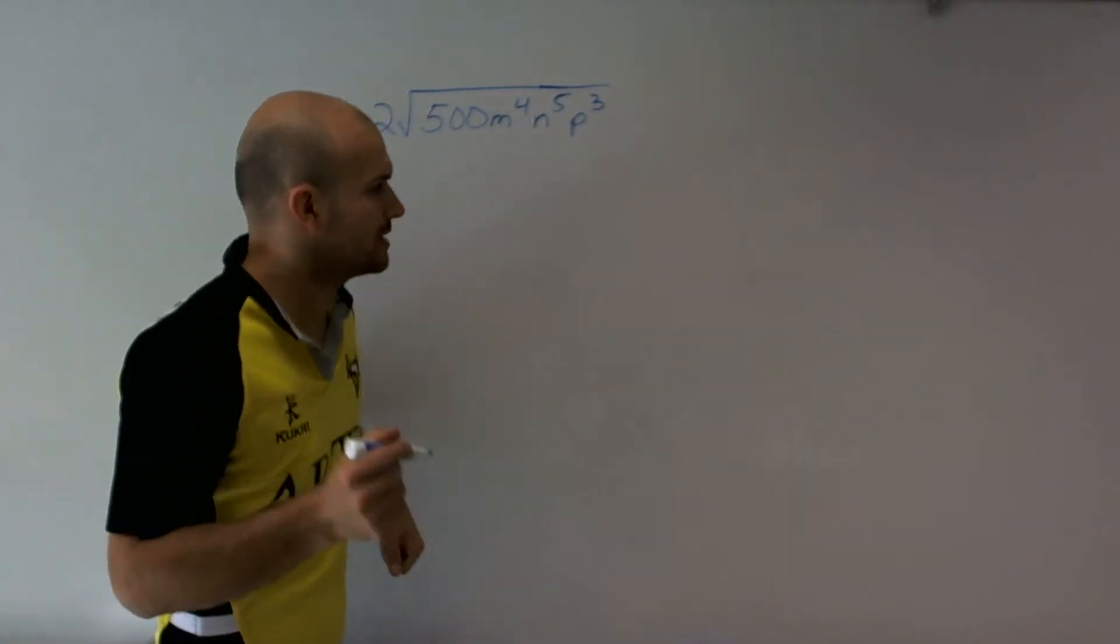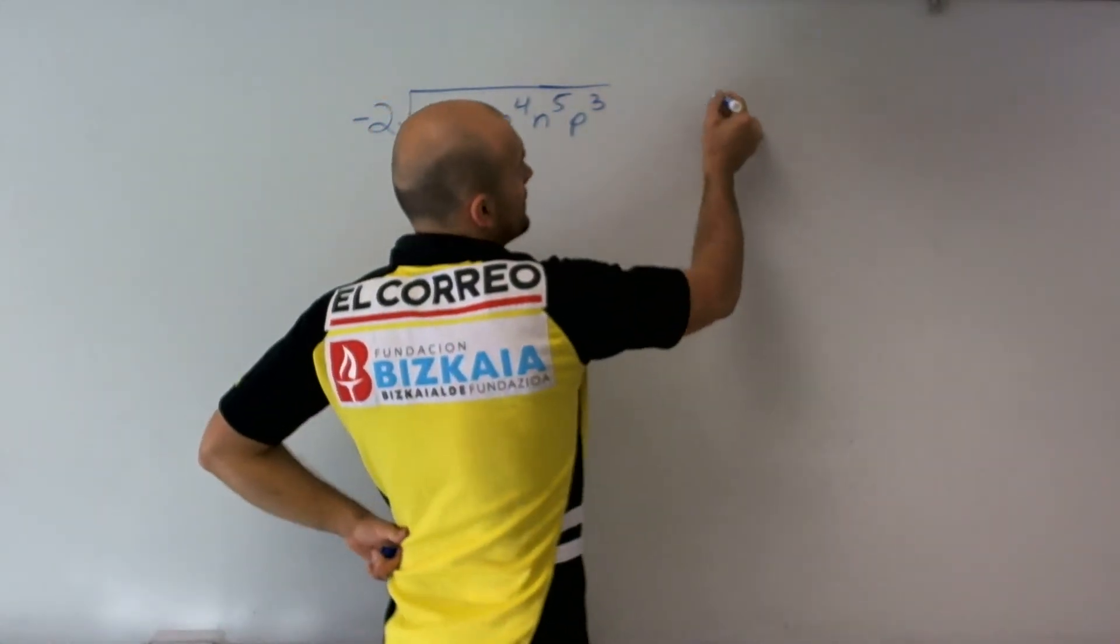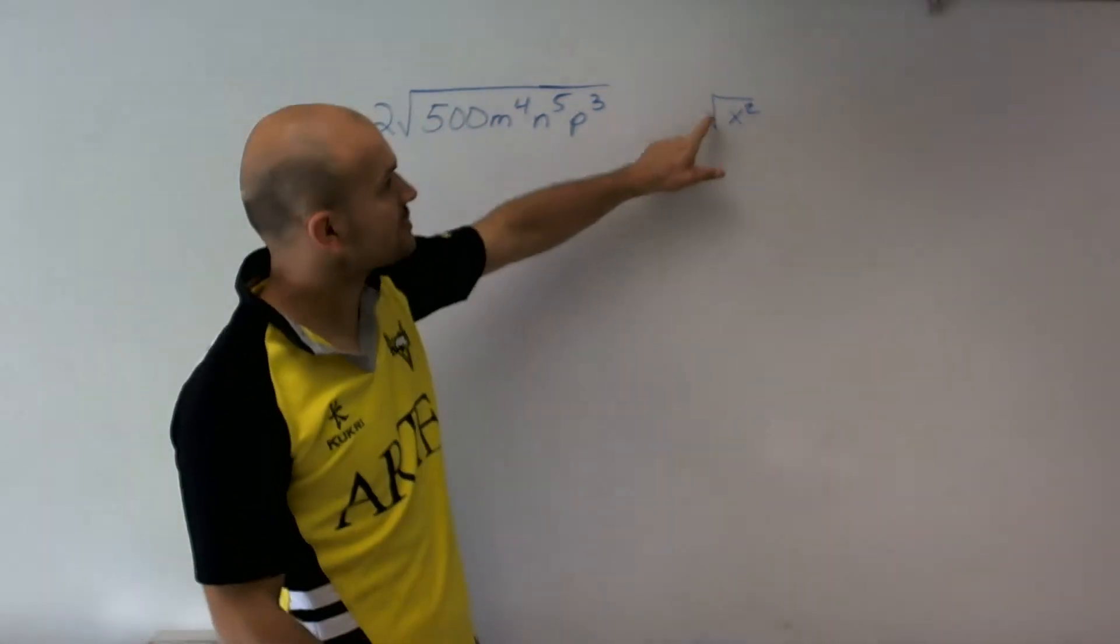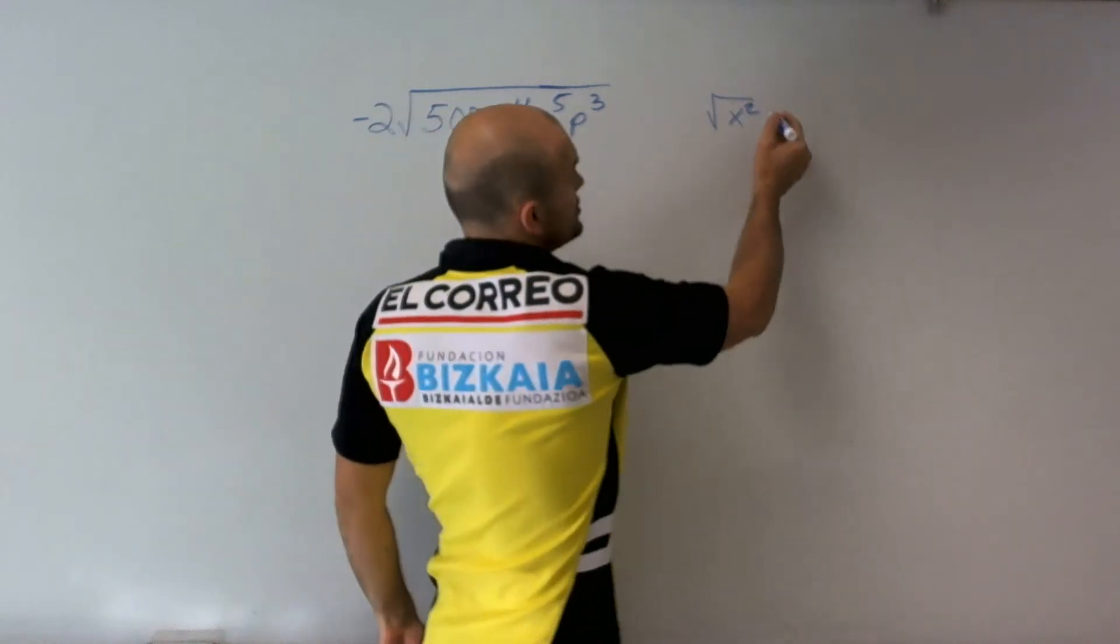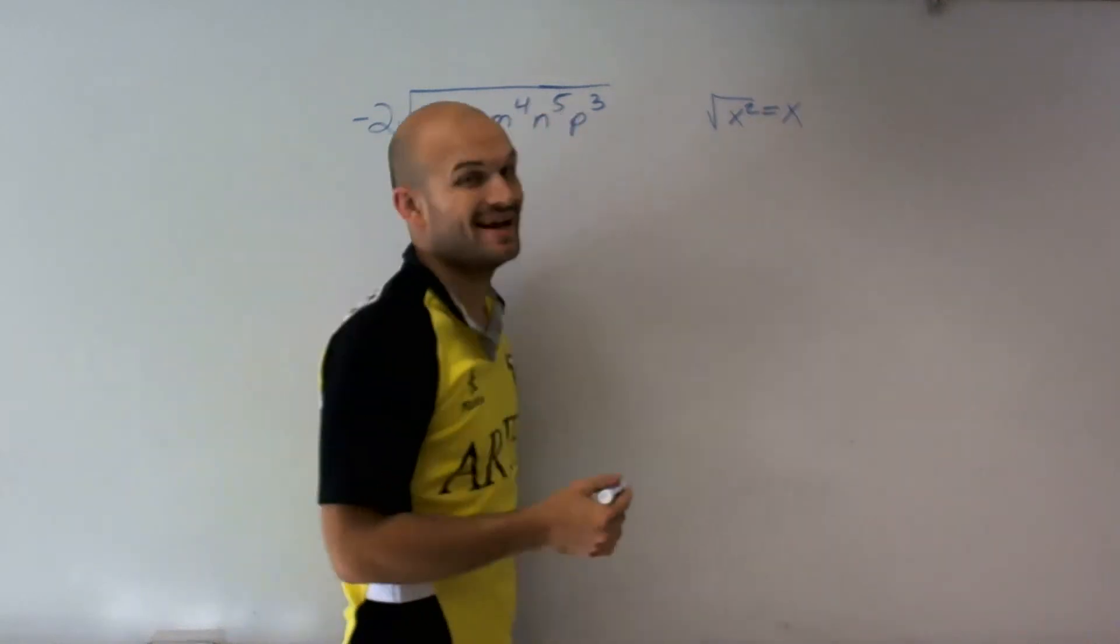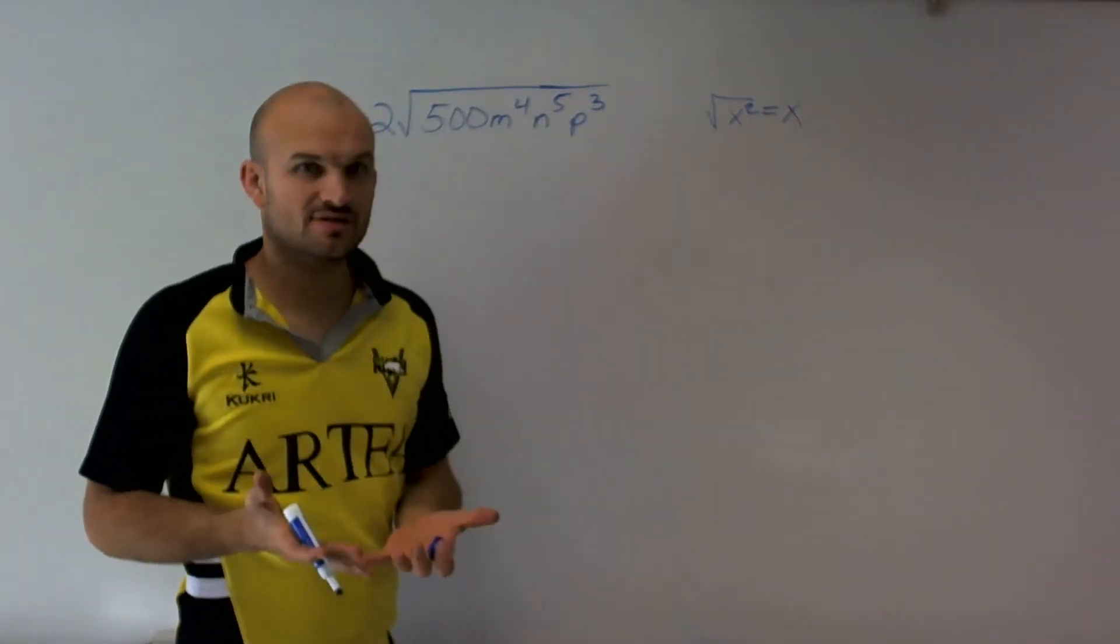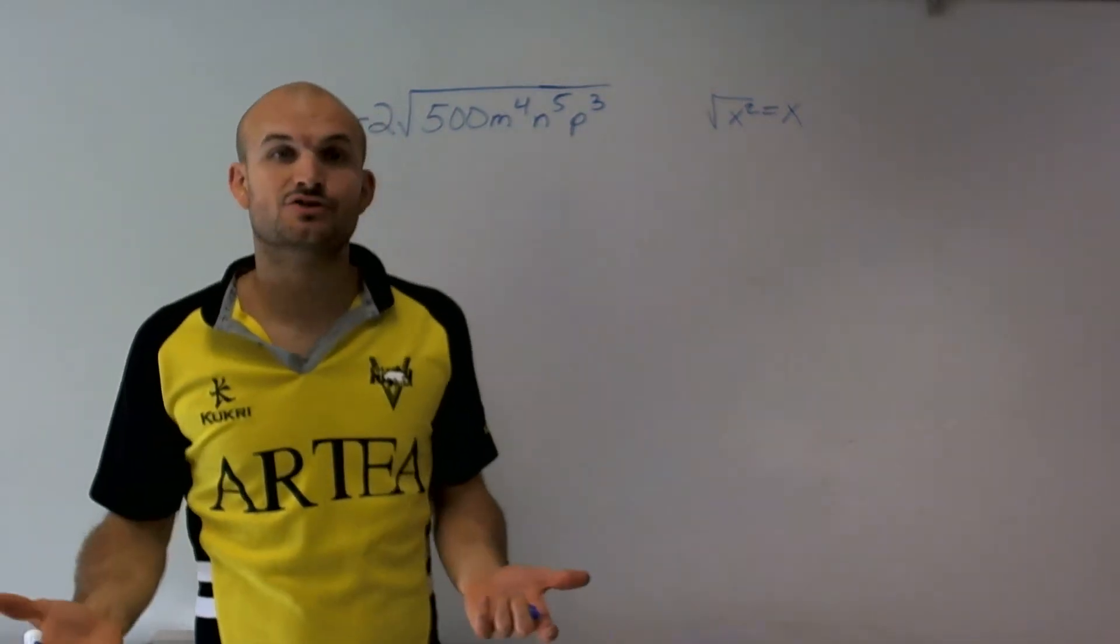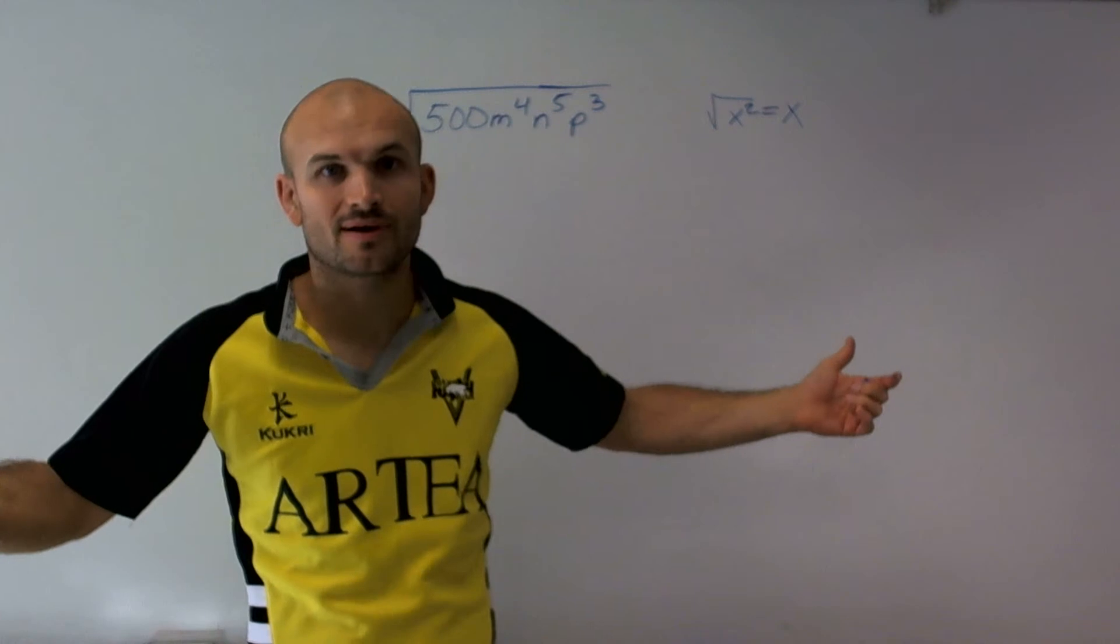One thing I want to go through with you is understanding the square root of a square number. The square root of a square number is just going to equal that number. Here I'm dealing with variables, but there are special types of numbers that we can take the square root of, which we call our square numbers.